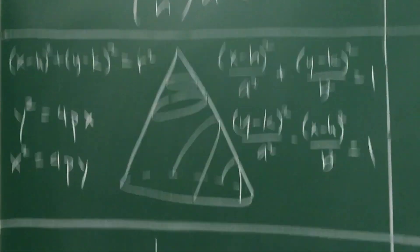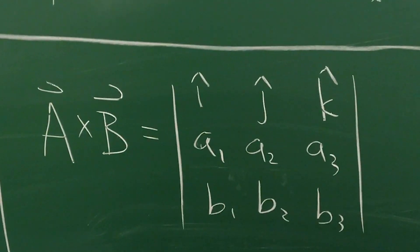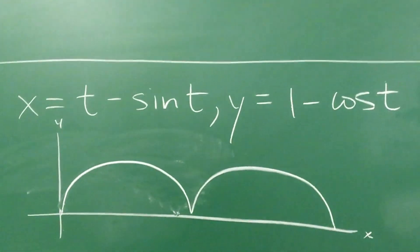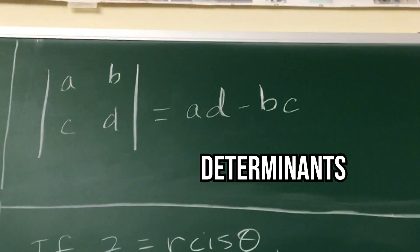Archimedes formula. Binomial theorem. Conic sections. Continued fractions. The cross product. Cycloids. DeMoivre's theorem. Determinants.